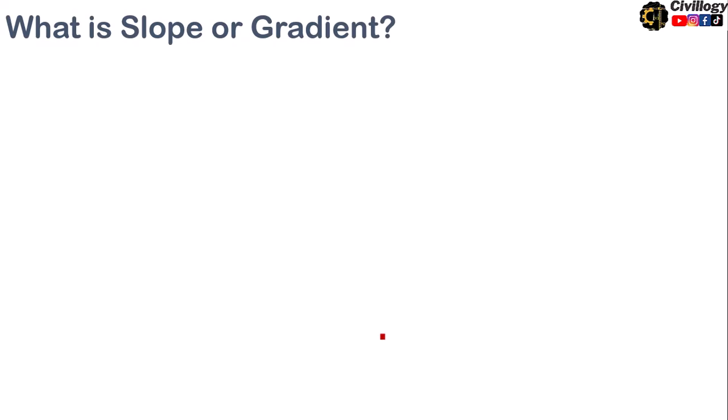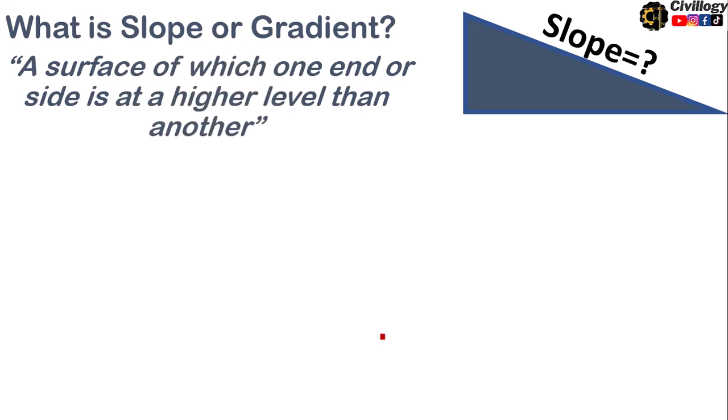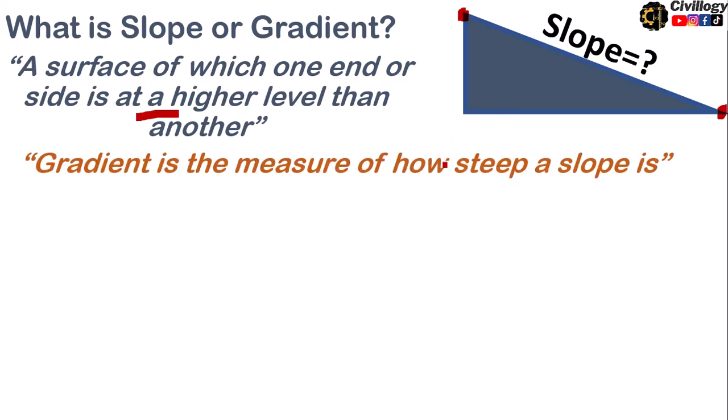Now, let's have a look at what is slope and how it is defined and what is gradient. Being civil engineer or surveyor, you must know what is slope, how it is defined and what is difference between slope and gradient. Here is the definition: a surface of which one end or side is at higher level than another. As you can see over here, this point is at higher elevation as compared to this point. So the line joining these two points is called slope and the gradient is the measure of how steep a slope is. The slope can be expressed in the form of ratio, in the form of percentage or in the form of degrees.